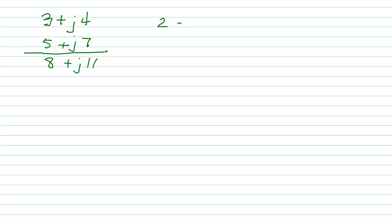2 minus J4 plus 2 plus J5 equals 4. Then we have minus J4 plus J5 plus J1 or simply J.